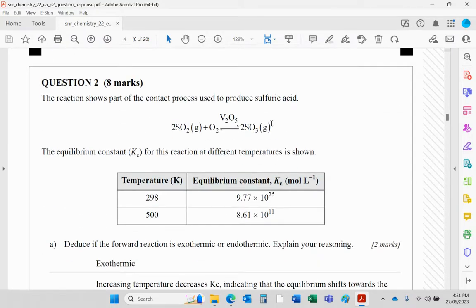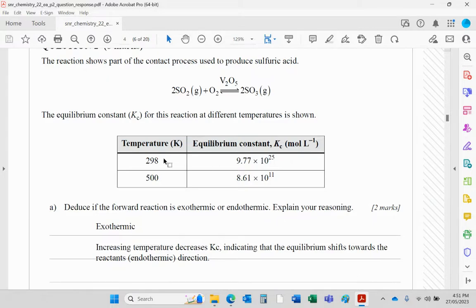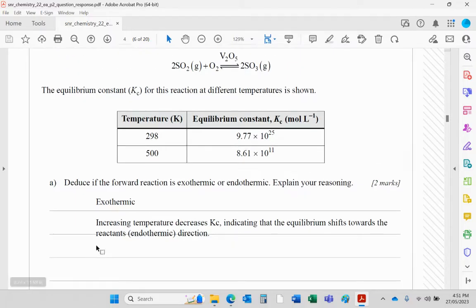Question two, the contact process to make sulfuric acid with the vanadium oxide catalyst. KC for the reaction at two different temperatures is shown. You will see that as the temperature increases, the KC value decreases. Therefore, when the temperature increases, the system is shifting to the left, meaning that's the endothermic direction. So therefore, the forward reaction will be exothermic. Increase in temperature decreases KC, so effectively the equilibrium is shifting in the endothermic direction, meaning the forward reaction is exothermic.